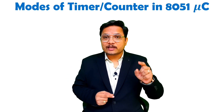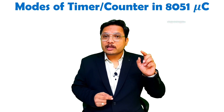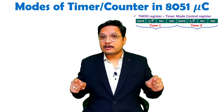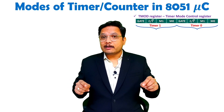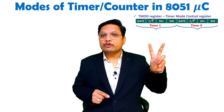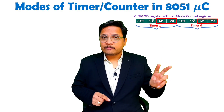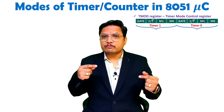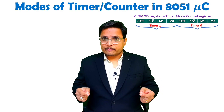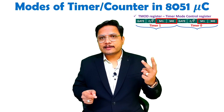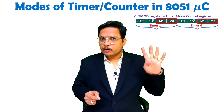For that you need to look at how the TMOD register is structured. In the basic format of the TMOD register, for Timer 0 and Timer 1 we have two bits each. Those two bits identify which mode the timer is working in. By using two bits we can select four modes.